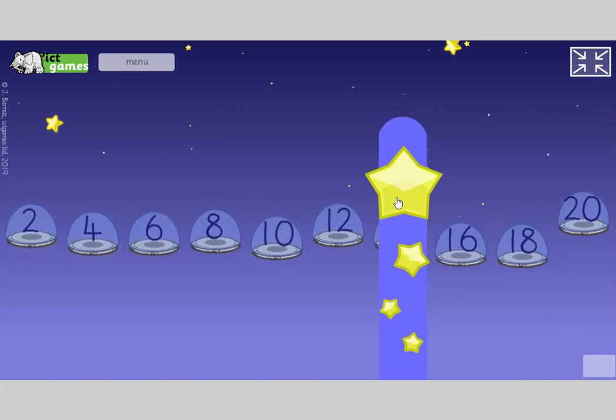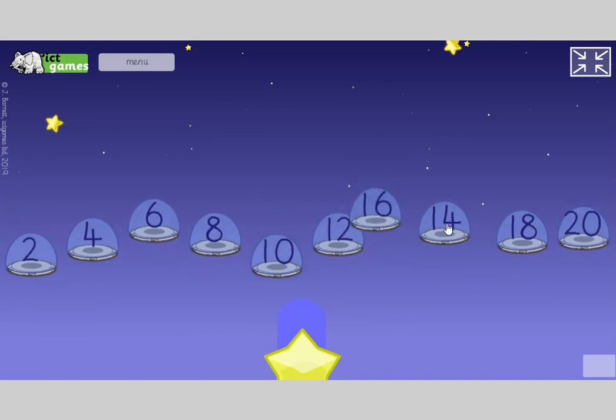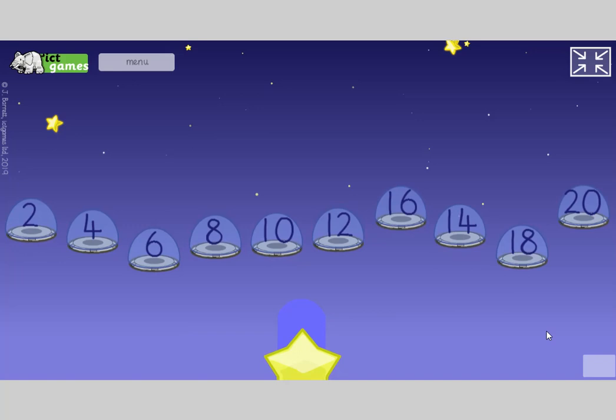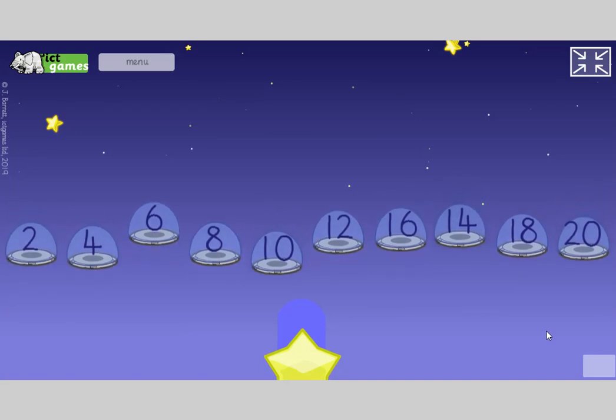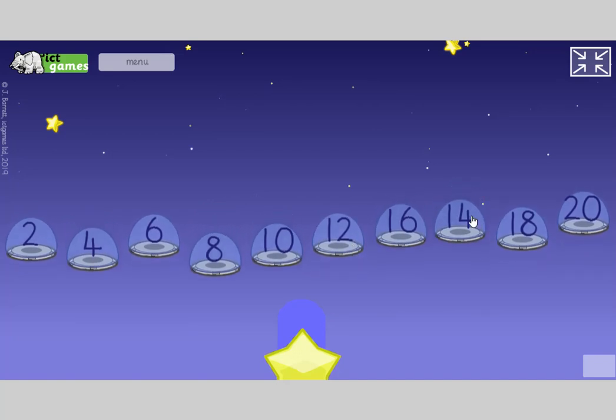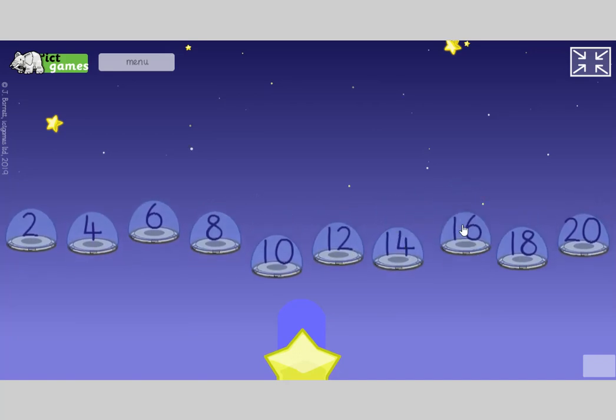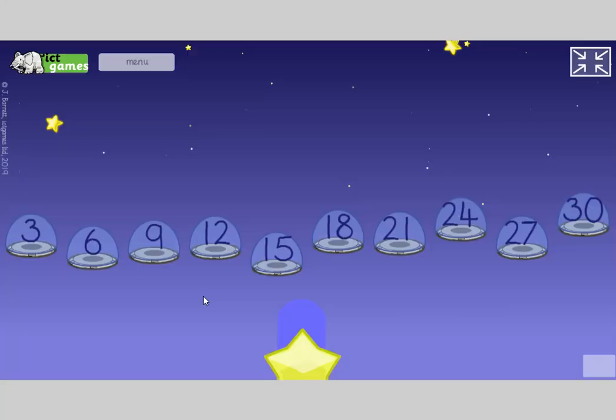And again, call out: 2, 4, 6, 8, 10, 12, 14, 16, 18, 20. Okay, close your eyes. Open your eyes again. What's covered? Yeah, 14. Okay, close your eyes again. Open your eyes again. What have we done? Let's try it out. 2, 4, 6, 8, 10, 12. Yeah, I've swapped the 14 and the 16 round. Can't fool you.